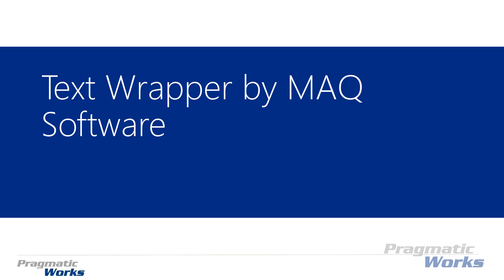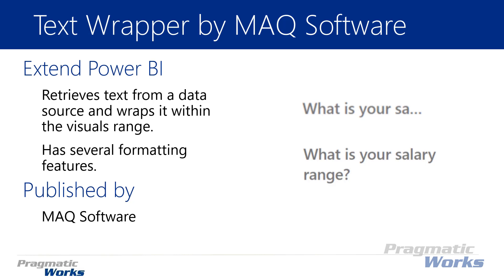Welcome back to the Power BI custom visuals course. In this module we're going to be looking at the Text Wrapper by MAQ Software. This is a very simple visual — the basic idea is to take text from your dataset and wrap it. Think about text wrapping in Excel. You'll see on the right-hand side the top example being some unwrapped text, and the bottom showing text that wraps to the next line. It allows us to pull in data and wrap it within the visual's range, auto-adjusting to fit the values.